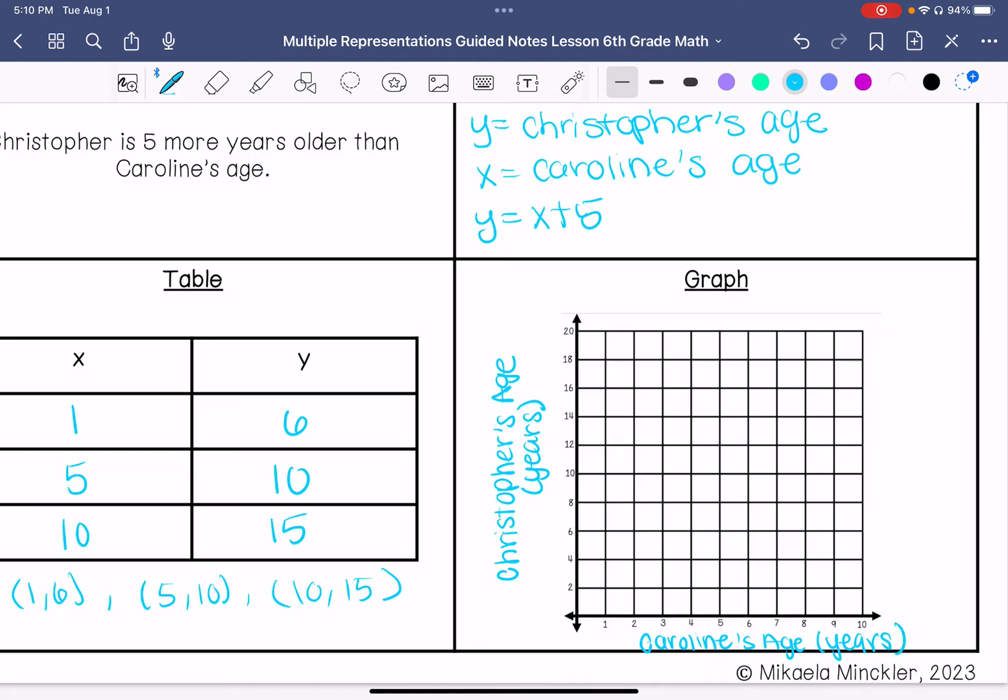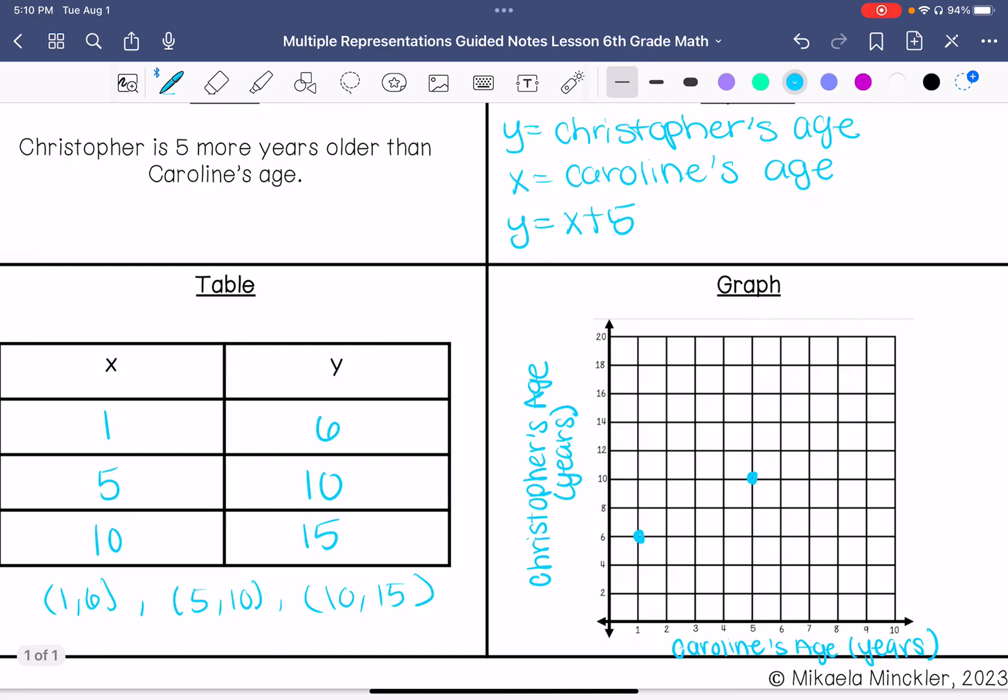So when Caroline is 1, Christopher is 6. When Caroline is 5, Christopher is 10, and when Caroline is 10, Christopher is 15.